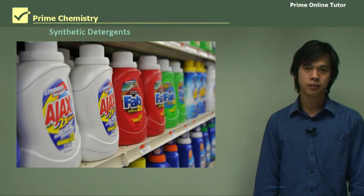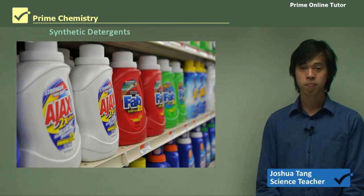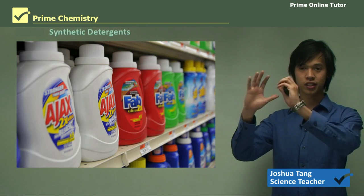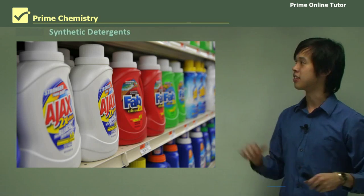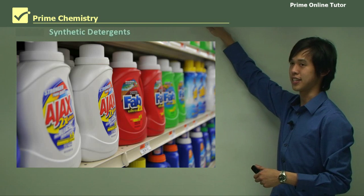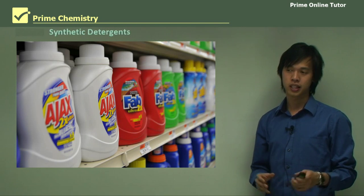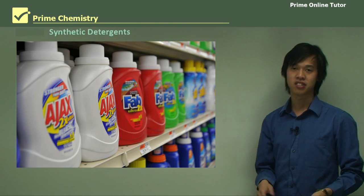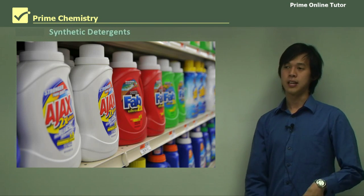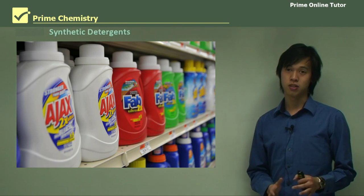Hello, everyone. Welcome again. Today's lesson will be on industrial chemistry. In the previous lesson, we looked at emulsions, and what that is building towards is our study of synthetic detergents, which is the focus of today's lesson. Synthetic detergents are simply cleaning agents developed from petrochemicals. We're going to look at the different types and what each of them is used for.